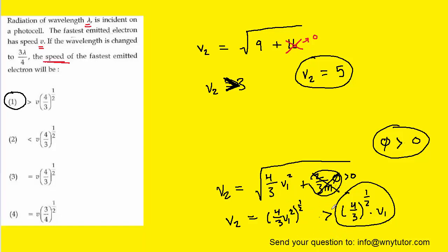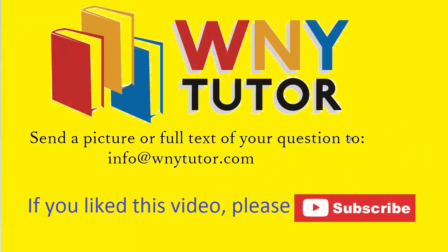If you have any questions, please let me know in the comments. The correct answer is that v2 is greater than (4/3)^(1/2) times v1, because the work function under the radical was greater than 0. Thanks for watching — if you liked the video, click the thumbs up and subscribe. You can send in your own question to the email address on screen, and I'll do my best to post an answer on YouTube.